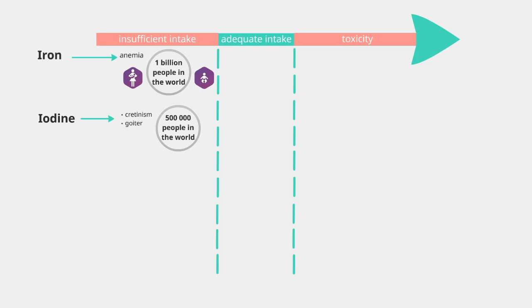Iodine deficiency, leading to creatinism and goiter, is frequent in Asia, South America, and Africa, and affects 500,000 people.